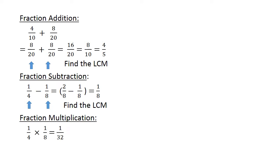Fraction Multiplication: 1 over 4 times 1 over 8. 1 times 1 equals 1 and 4 times 8 equals 32, so the answer is 1 over 32.